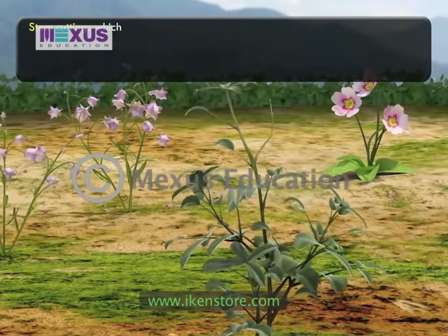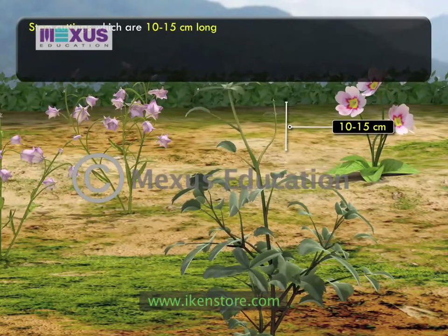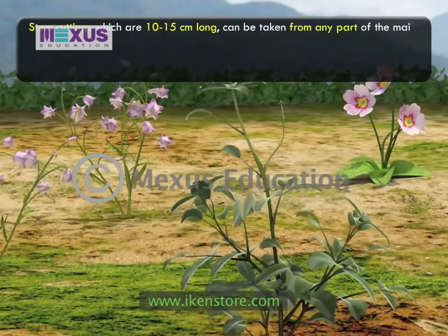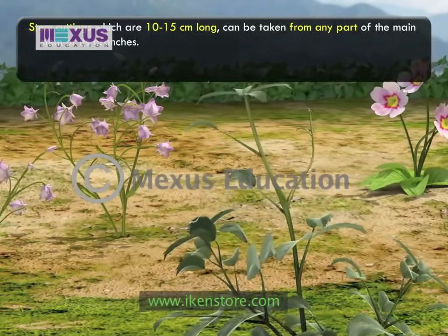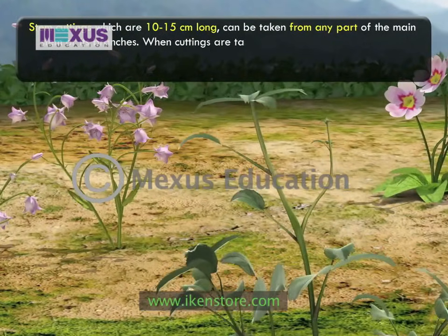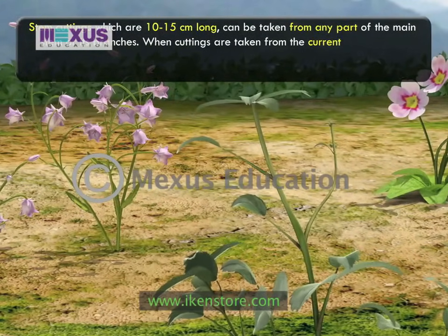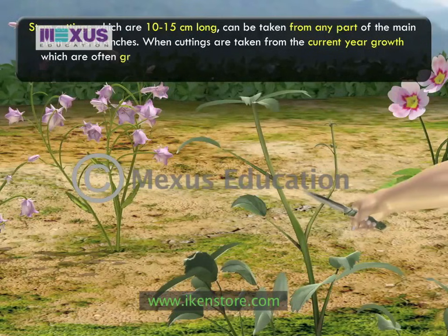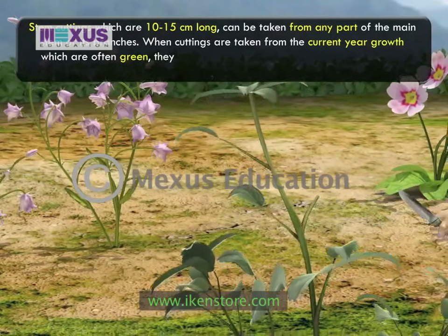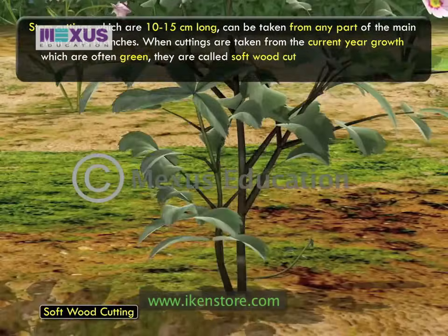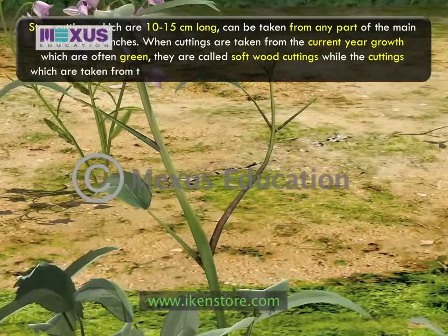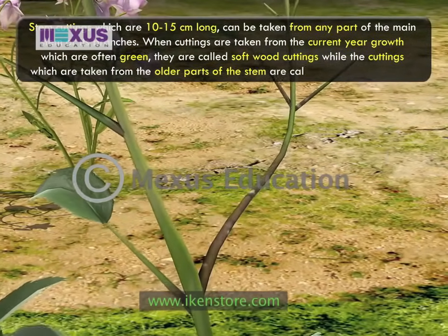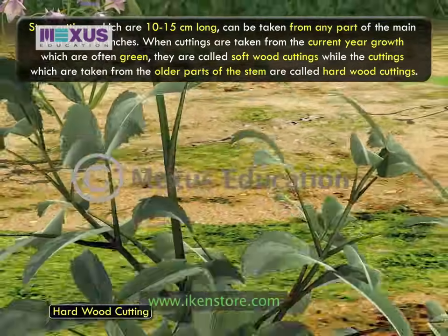Stem cuttings which are 10 to 15 cm long can be taken from any part of the main stem or its branches. When cuttings are taken from the current year's growth which are often green, they are called softwood cuttings, while the cuttings which are taken from the older parts of the stem are called hardwood cuttings.